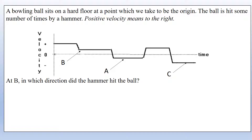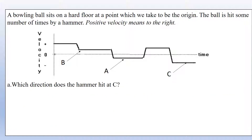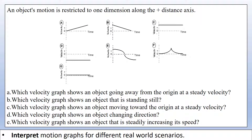At point B, the ball was traveling to the right and after the hammer hit it, the velocity decreased. The force must have acted opposite to the motion — to the left — which is how it slowed the ball down. At point C, the velocity is constant, so there was no hammer strike, because a constant velocity means no net force, as Newton's first law tells us.